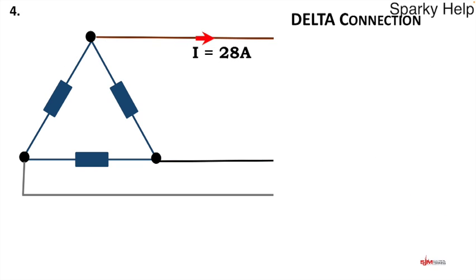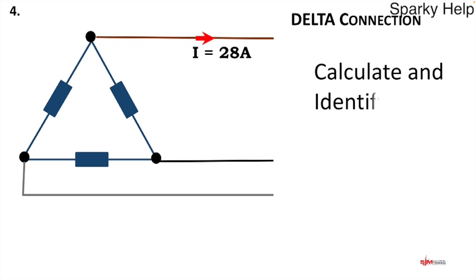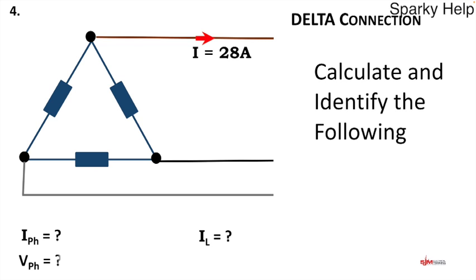Let's move on to question four. I've given you a delta connection with resistors and a current. Calculate and identify the following: each resistor is 12 ohms, and I require you to work out the currents and voltages. Pause the video, get your pen and calculator, and give it a go. In the meantime let's go back and answer question three.